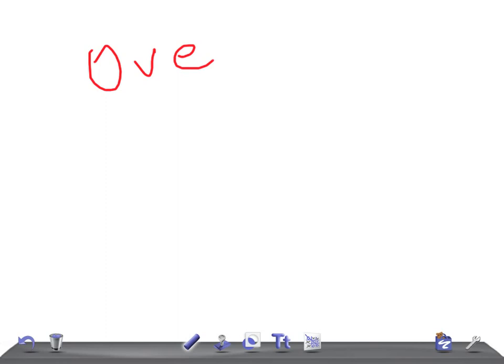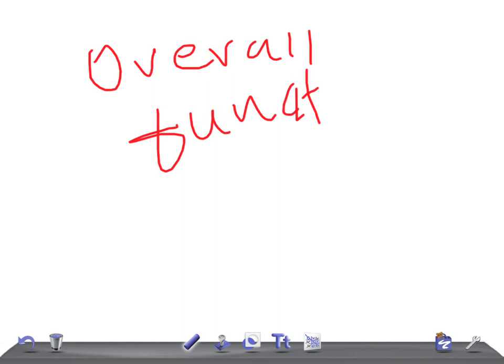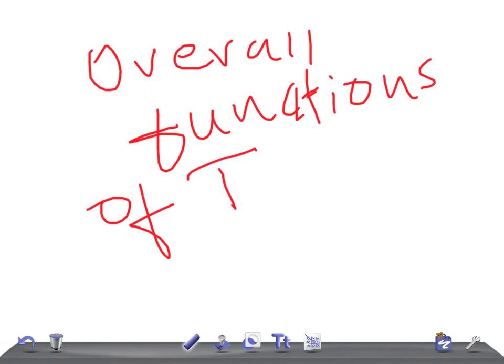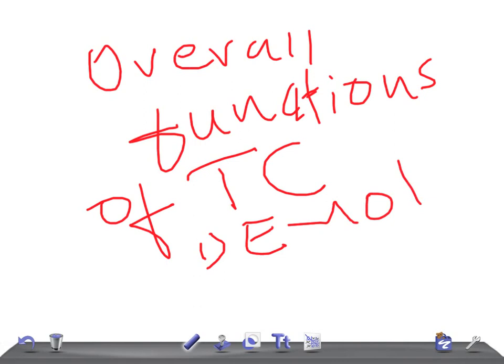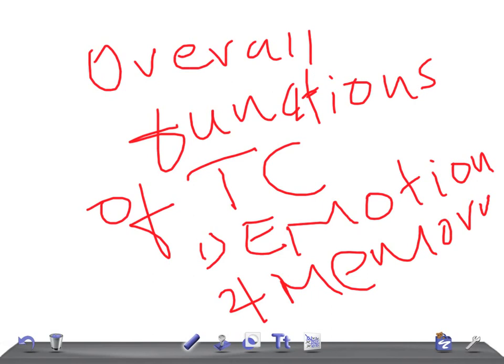Before starting, please subscribe to our channel and share our videos, and if you like it, give a thumbs up. Now, the core functions of the temporal cortex — remember three things: emotions, memory, and language. These are the basic functions of the temporal cortex.